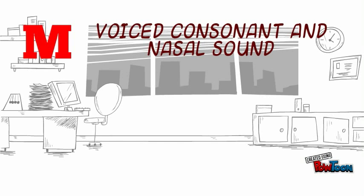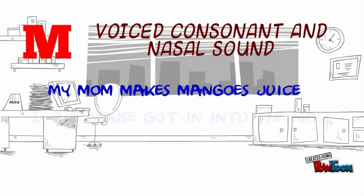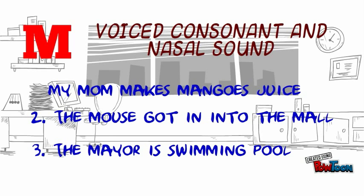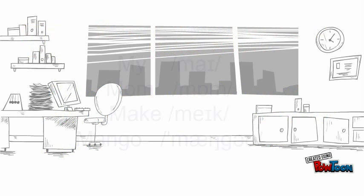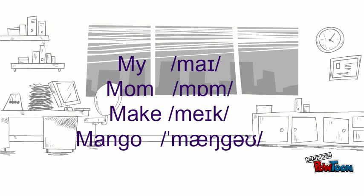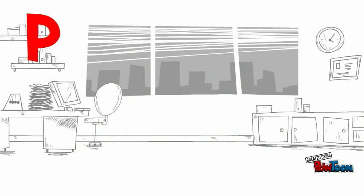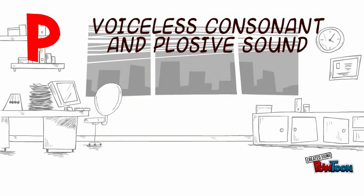M is a voiced consonant and nasal sound. Examples: mime, monk, make, mango, mouse, monk, major, swimming. P — this is a voiceless consonant and stop sound.